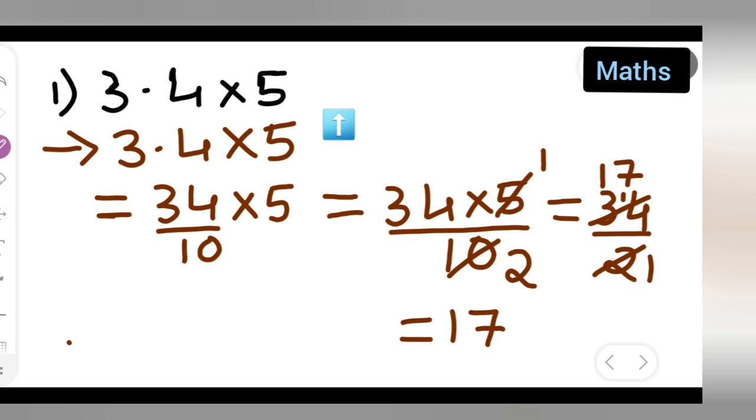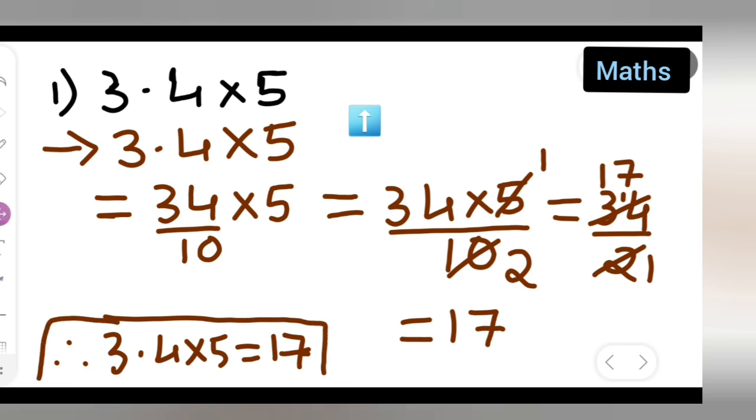Therefore you all can say that 3.4 multiplied by 5 is equal to 17. This is your final answer. So I hope you all have understood how to multiply 3.4 multiplied by 5 and thanks for watching.